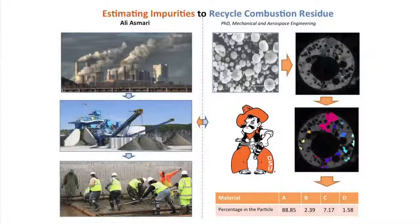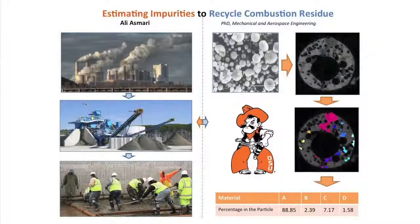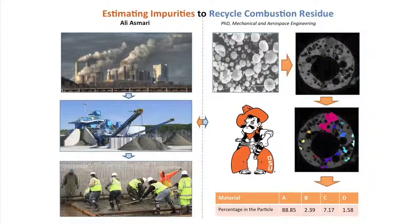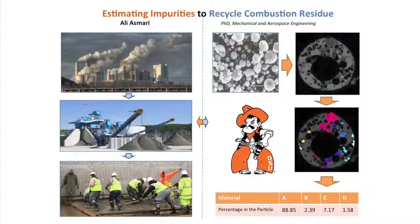Up on the right is the grayscale image that we get. My personal expertise is doing image processing in computer vision. Using image processing algorithms, I designed a program that helps the computer analyze and segment all the impurities in this image. In the left-middle image, you can see that different regions of impurities are shown with different colors. The computer does this analysis on different segments of the particle and adds them all up.